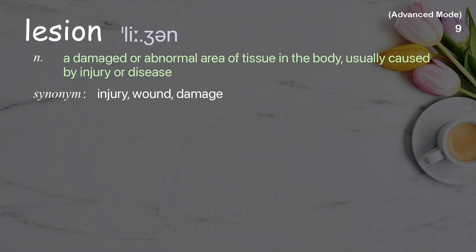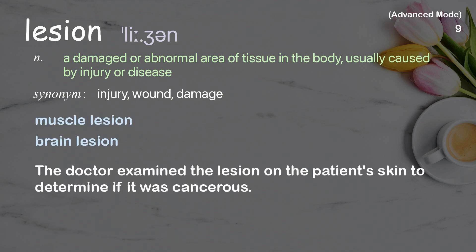Lesion: a damaged or abnormal area of tissue in the body, usually caused by injury or disease. Examples: muscle lesion, brain lesion. The doctor examined the lesion on the patient's skin to determine if it was cancerous.